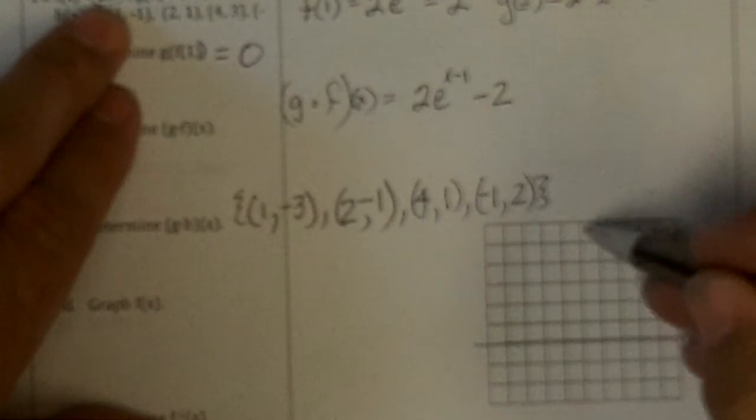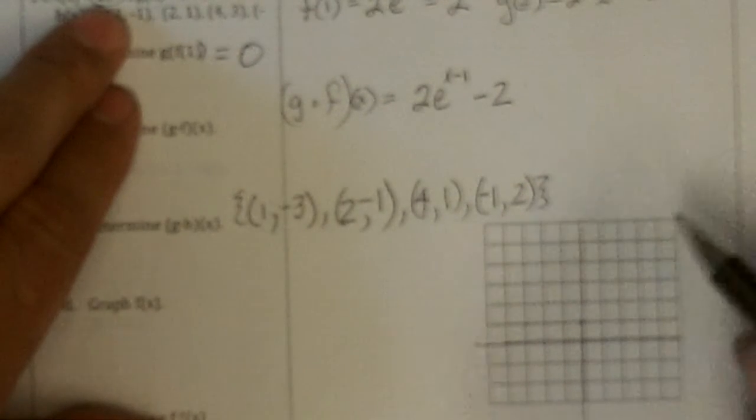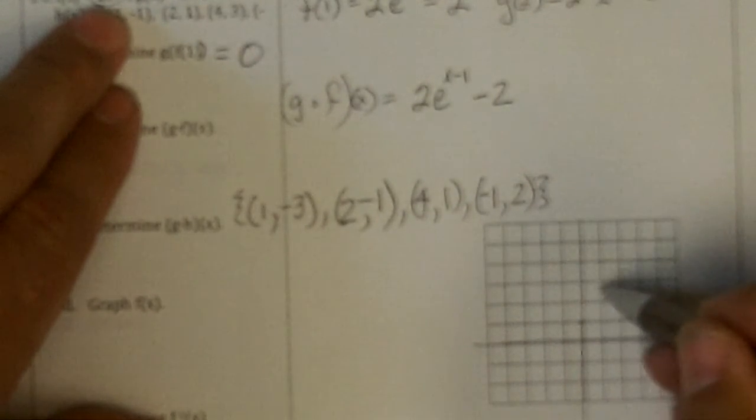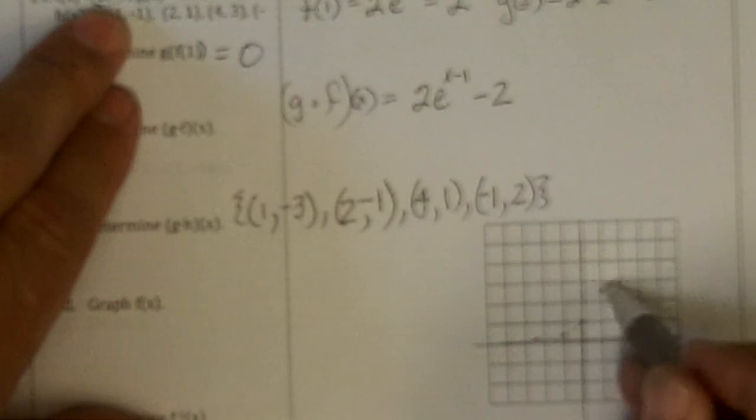It says graph f of x. So that's e to the x. E to the x goes to there, and e to the 1 is 2.7. E, 1 over e, and you can find those points.